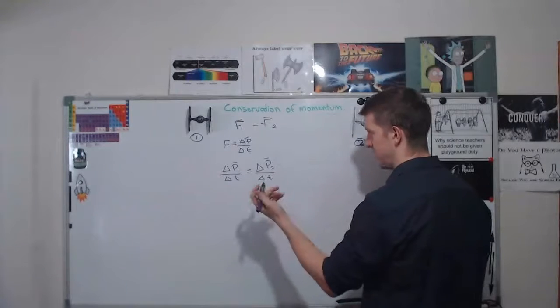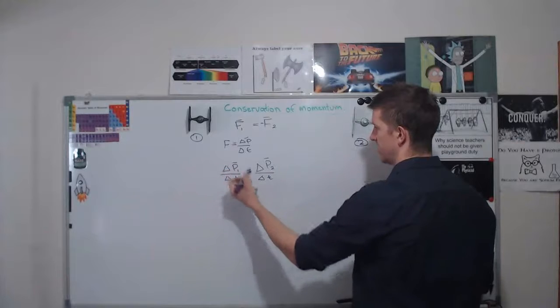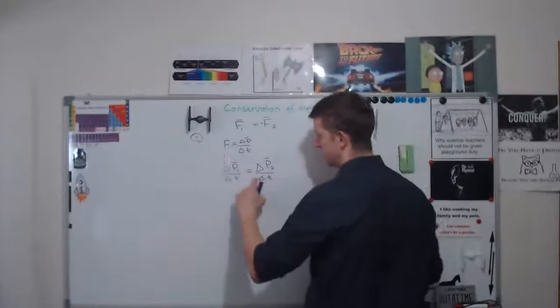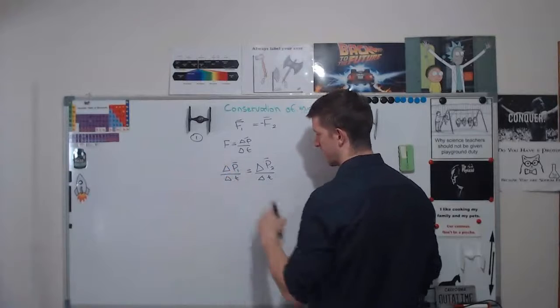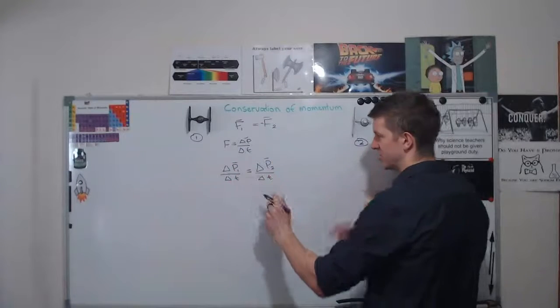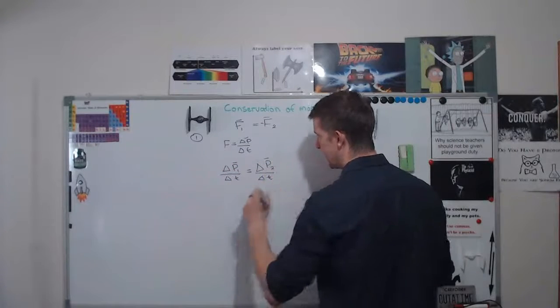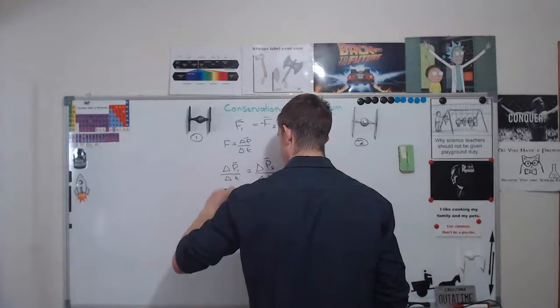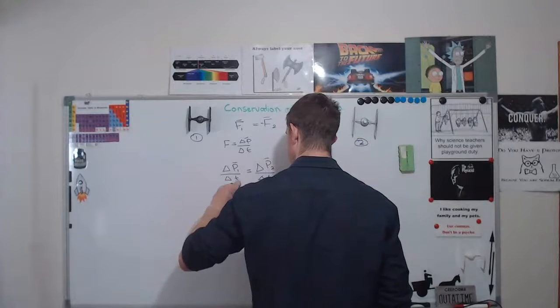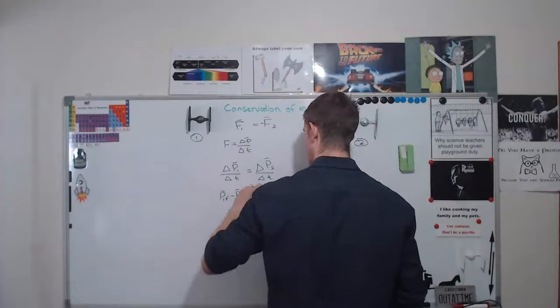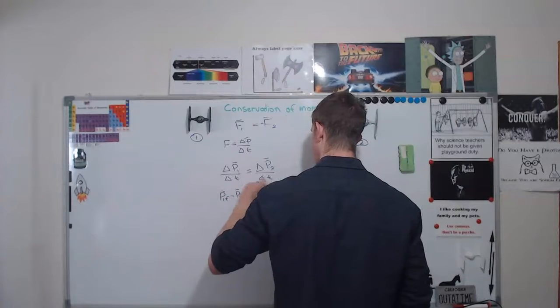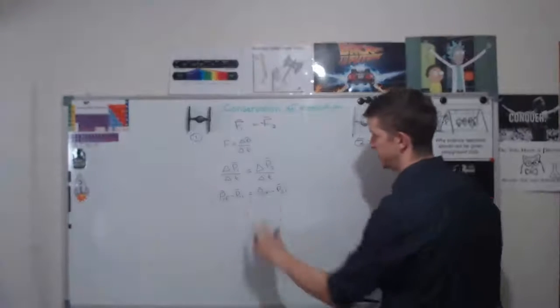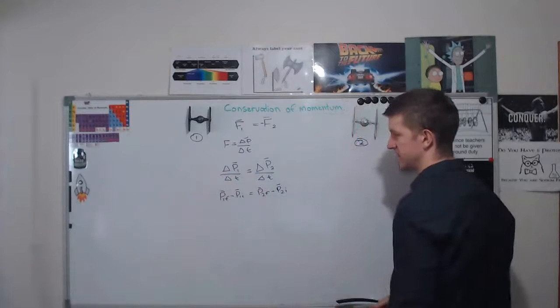And I can expand this out further and rewrite the P's, but firstly notice that I've got delta T on the bottom in both sides. So if this was to move up here, they would cancel out. So the delta T's vanish. So if I just expand my P's, I get P1 final minus P1 initial is equal to P2 final minus P2 initial. Remember the T's have cancelled out and I've just expanded out what the delta means.